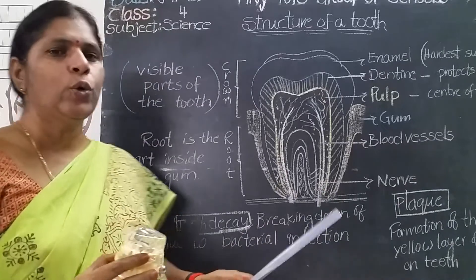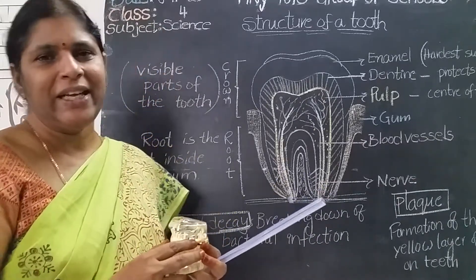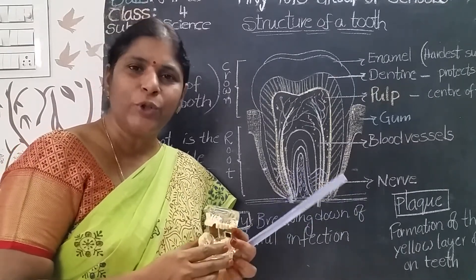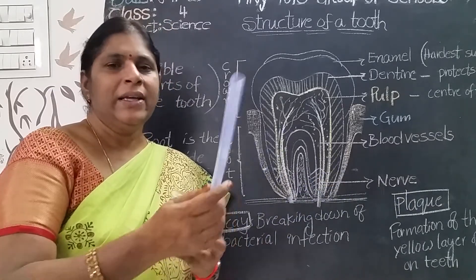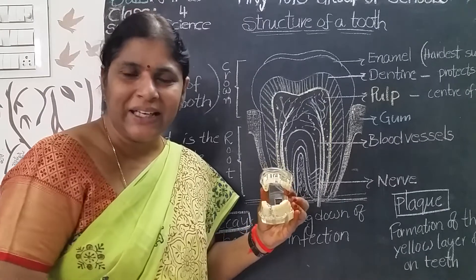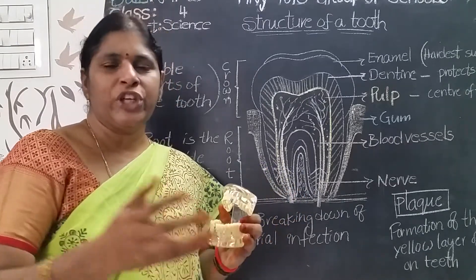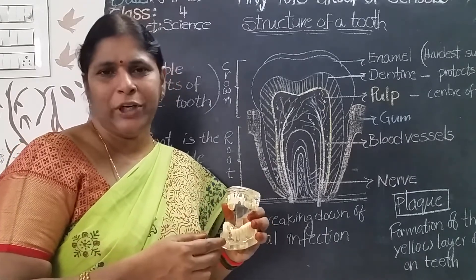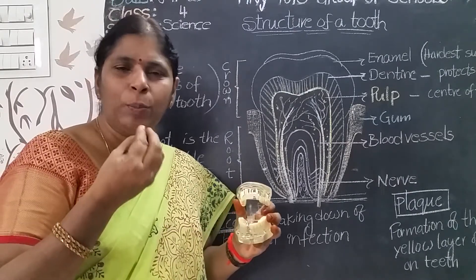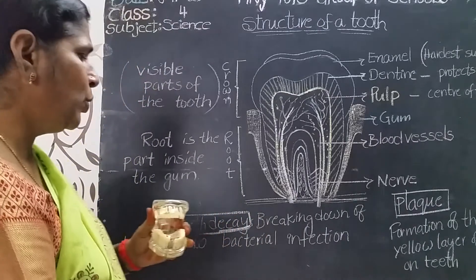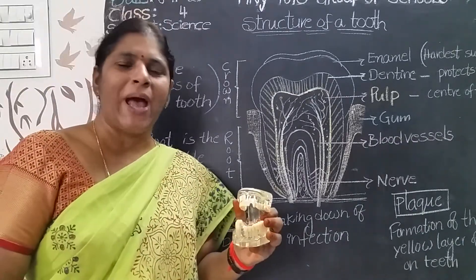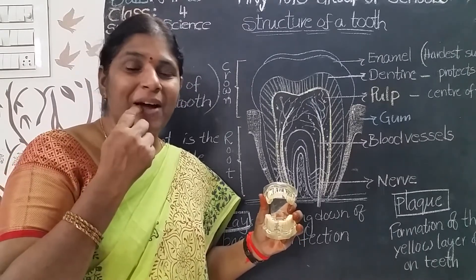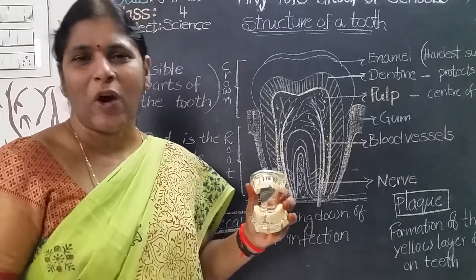Now we will discuss about tooth decay. Tooth decay is common in children. The main cause of tooth decay is bacterial infection. Children eat candies and sticky chocolates — that is why it is common in children. Tooth decay is the process of breaking down of teeth due to bacterial infection.